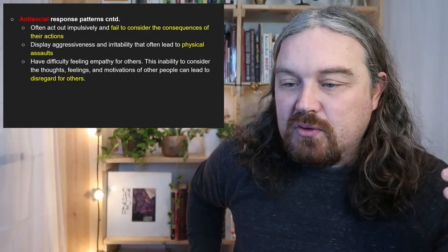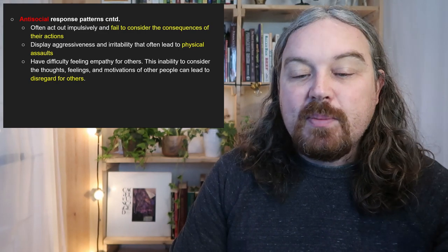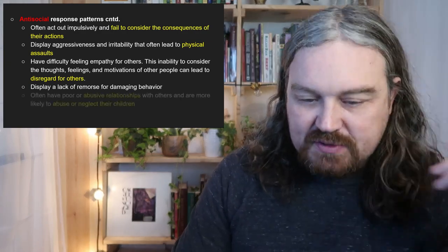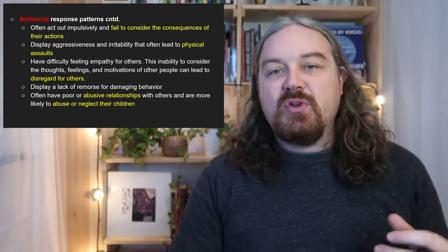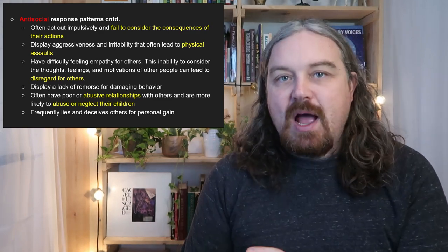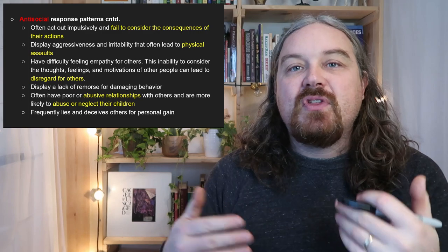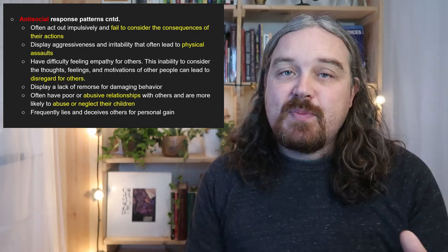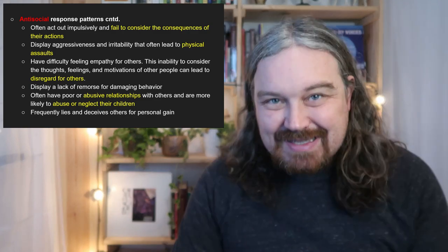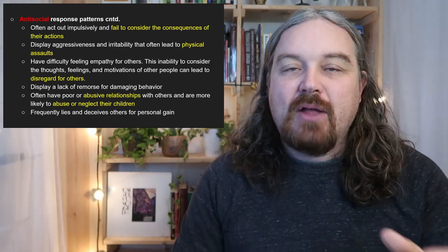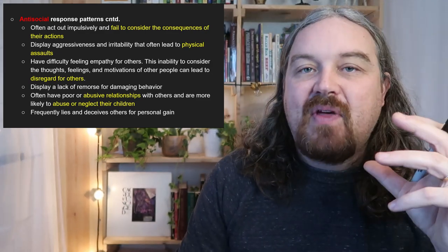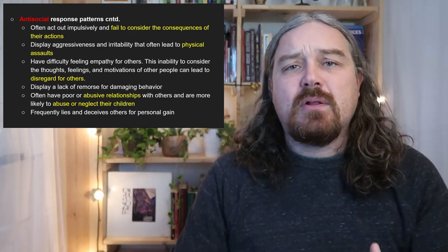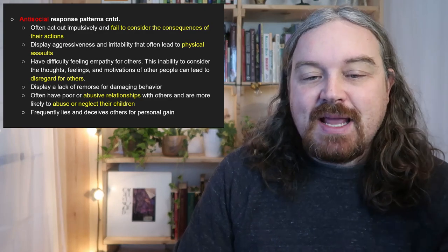They have difficulty feeling empathy for others and may not be able to — this inability to consider thoughts, feelings, and motivations of others leads to disregard for people around them. They display a lack of remorse for damaging behavior, even toward children or partners, and often have poor and abusive adult relationships. Statistically, if you were abused as a child, you're much more likely to abuse others. Understanding this pathology helps us trace how a pure, innocent child becomes someone who can harm the most vulnerable.